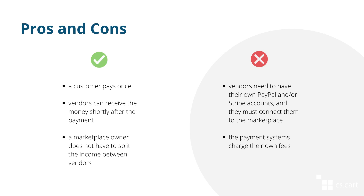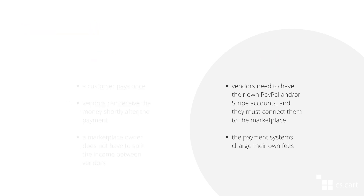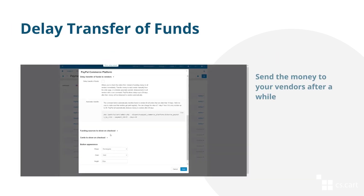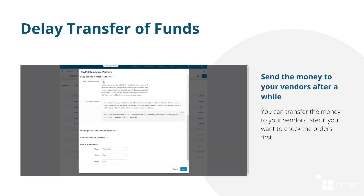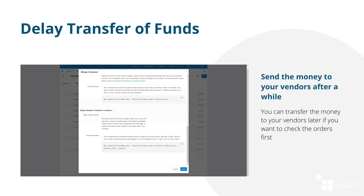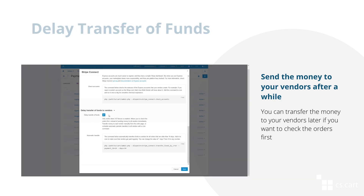However, this model is not without challenges. Vendors need to have their own PayPal or Stripe accounts, and they must connect them to the marketplace. The payment systems also charge their own fees. Both payment systems allow you to keep the funds on the marketplace account and transfer them afterwards, which may be useful if you want to check orders first instead of sending money to all vendors immediately.